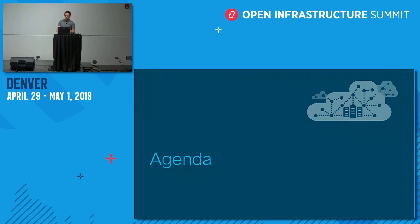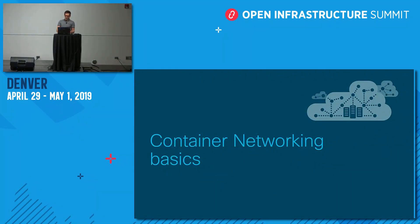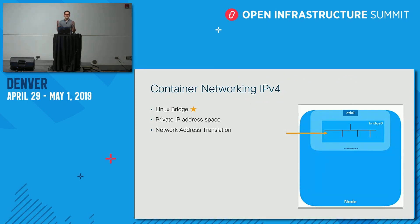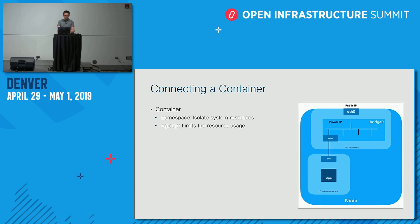For container networking, let's assume we have a virtual machine or instance, or node in container terminology. You typically have a main interface that provides connectivity to the rest of the world, and a Linux bridge that lets you connect the containers you deploy on this host. You allocate private IP addresses to your containers because we don't have enough public IP addresses, and if those containers need to reach external hosts, you use NAT to map private IP addresses to an external global IPv4 address.